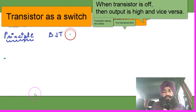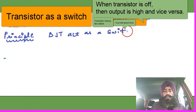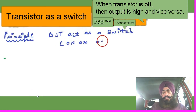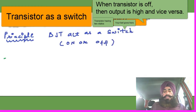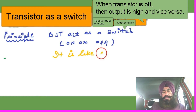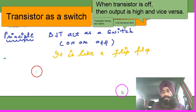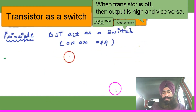Hello dear friends. Today I'll discuss with you how the bipolar junction transistor acts as a switch. A switch, you know, is on or off — like a toggling switch. It is like a flip-flop, having 0 and 1 memory states.